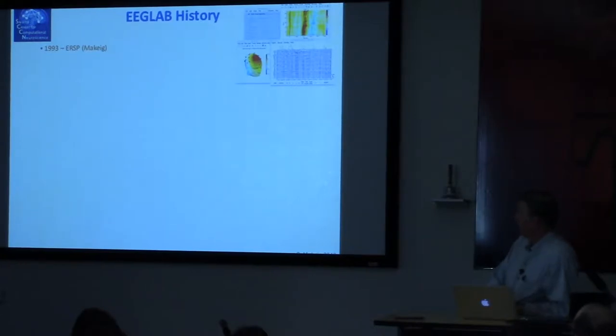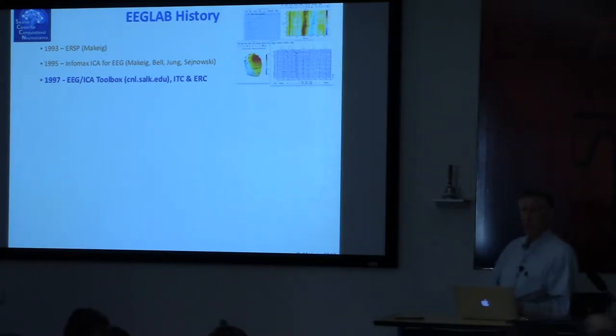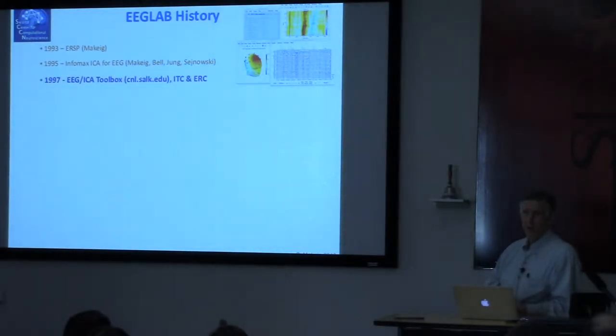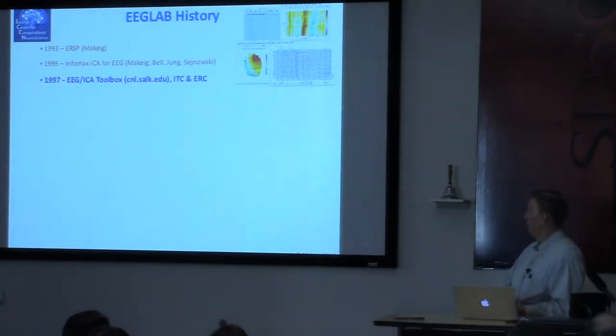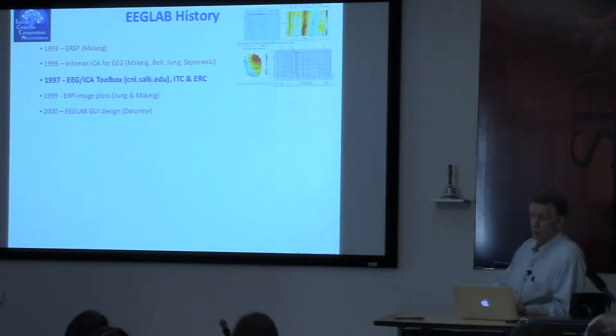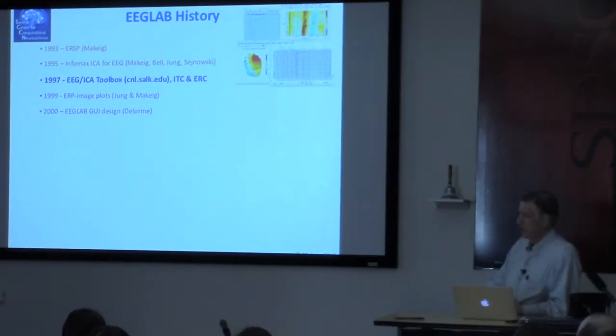EEGLAB history. After some original discoveries, I began putting functions on the web. People didn't understand what I was talking about with ICA. So I put the functions I'd written on the web in 1997, a toolbox of those MATLAB functions including new kinds of plotting of single trials. Then Arnold came along with his master's in computer science and said, 'I can put a GUI on it.' In fact, he said, 'I already did.' That was the beginning of EEGLAB.